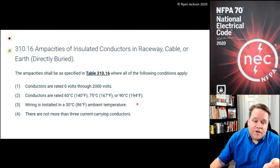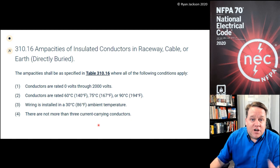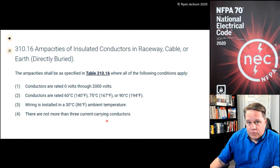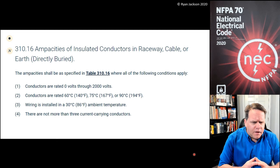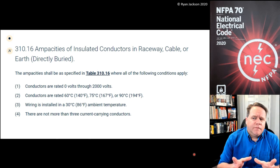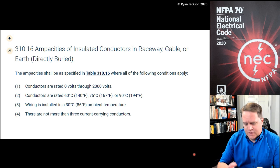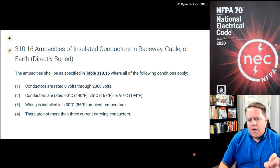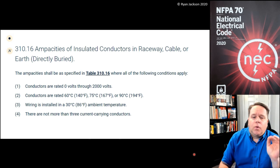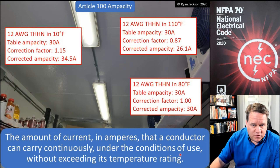So we have ambient temperature to concern ourselves with — if it's not 86°F, we have to apply a temperature correction factor. We also have the number of current-carrying conductors — if it's more than three, we have to apply an ampacity adjustment. I did a video earlier that covers what is and what is not a current-carrying conductor, because it's not as simple as saying every wire that's not green is a current-carrying conductor. But if I have more than three current-carrying conductors or I'm in an ambient temperature that's not 86°F, I've changed the conditions of use and I have to adjust the ampacity.